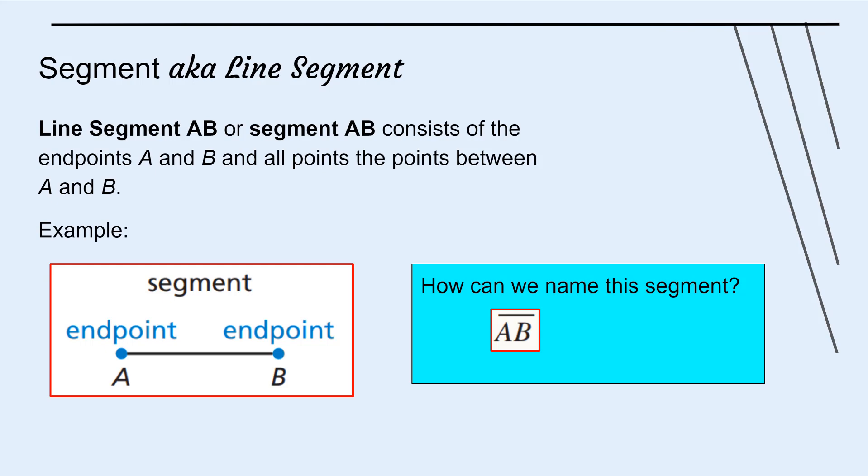We can call it segment AB. And notice how the line above no longer has those little arrows, because this is a segment, not a line. Or we can call it BA, because A and B are the endpoints. So we can call it AB or BA with a line above, showing that it is a segment and does not continue on infinitely.